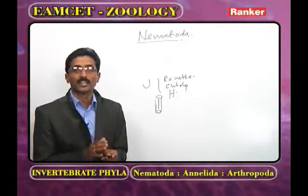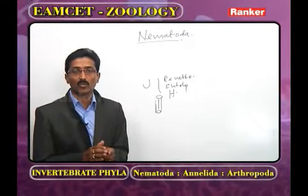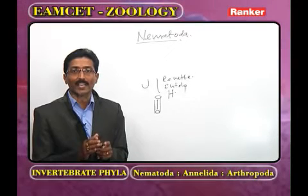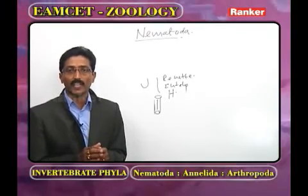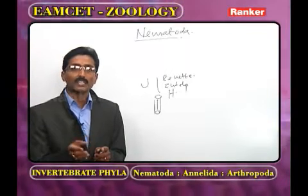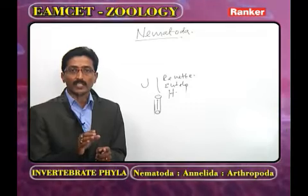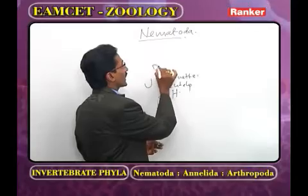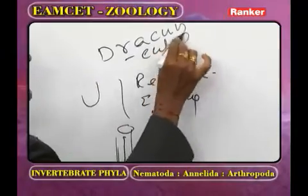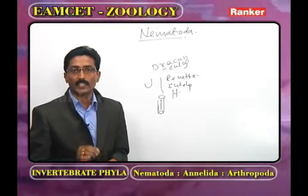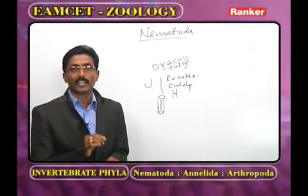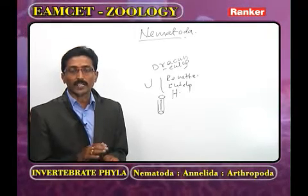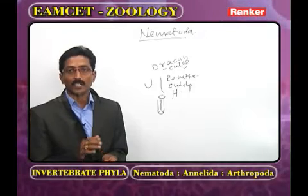As for development in nematodes: male and female undergo copulation, after which the male generally dies. In the female body, fertilization takes place; females are generally oviparous. One exception is Dracunculus, which is viviparous. Another example, Oxyuris, is oviparous; all remaining nematodes are also oviparous.